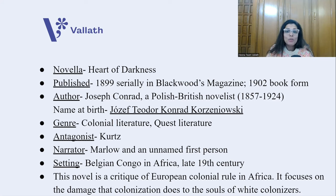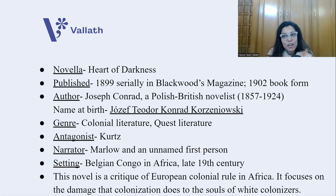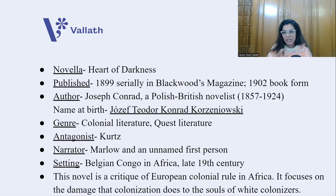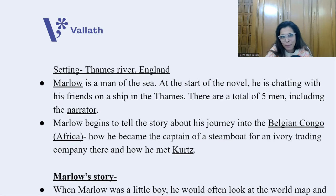Belgian Congo was a part of Africa colonized by Belgium — a country in Europe — very brutally and notoriously, with people being murdered for money. This novel is a critique of European colonial rule in Africa, but it primarily focuses on the damage that colonization does to the soul of the white colonizers themselves. Heart of Darkness portrays how colonialism affects the white colonizers.